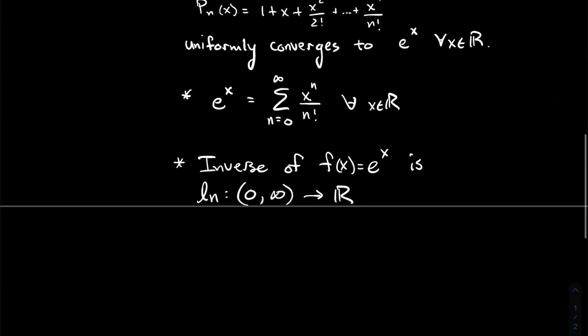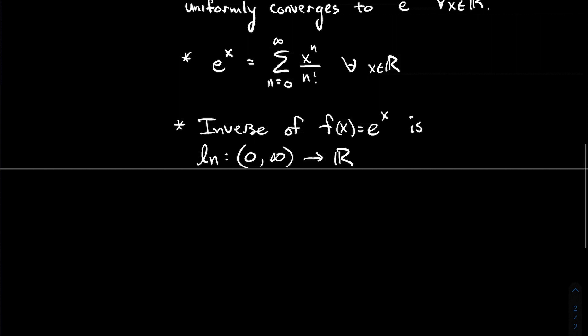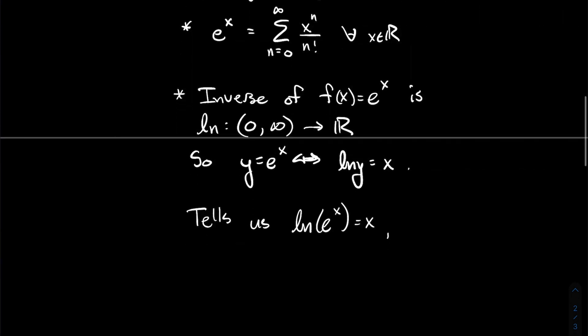Another property of the real exponential is that its inverse is the natural log, denoted ln. Its inputs are positive real numbers (0, ∞) and it outputs any real number. Saying y = e^x is equivalent to saying ln(y) = x. So ln(e^x) = x, and e^(ln x) = x, where you have to be careful — that last formula holds only when x is a positive real number since you're plugging into the natural log first.